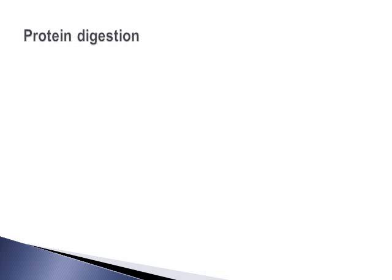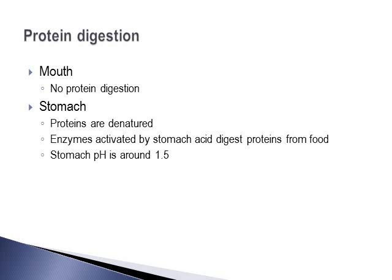Let's get into protein digestion and absorption. There is no digestion of protein in the mouth — only carbohydrate and a little fat digestion occur there. The stomach is where protein digestion begins. Proteins are first denatured by stomach acid, which has a pH of around 1.5. Once proteins have been denatured, enzymes in the stomach are activated by the stomach acid and then further digest the proteins from food.